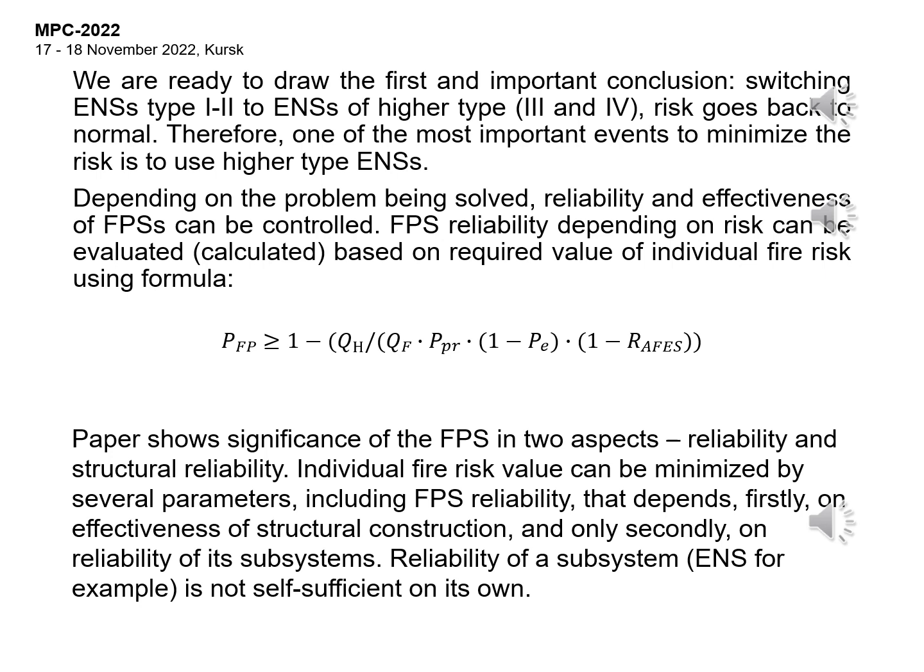Depending on the problem being solved, reliability and effectiveness of FPS systems can be controlled. FPS reliability depending on risk can be evaluated and calculated based on the required value of individual fire risk using the formula. The paper shows the significance of FPS in two aspects: reliability and structural reliability. Individual fire risk value can be minimized by several parameters, including FPS reliability, which depends firstly on the effectiveness of structural construction, and only secondly on the reliability of its subsystems. The reliability of a subsystem such as ENS, for example, is not self-sufficient on its own.